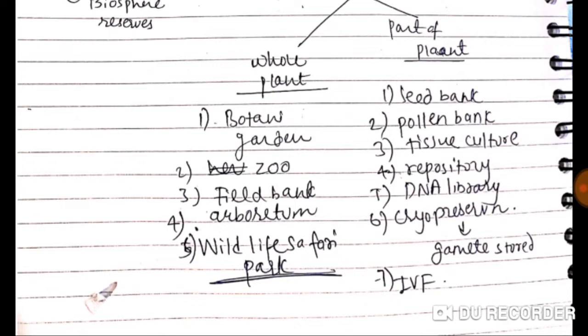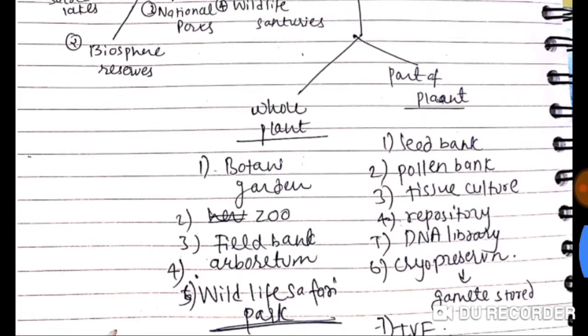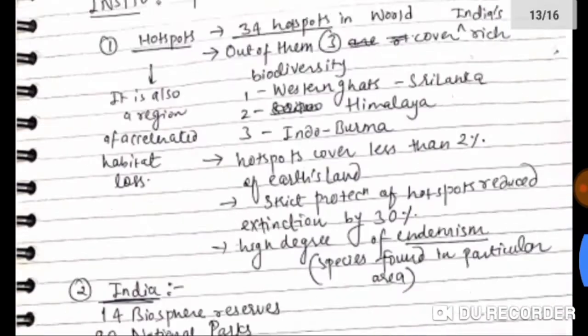Parts of the plant can be conserved as seed banks, pollen banks, tissue cultures, repositories, DNA libraries, cryopreservation (where gametes are stored), and in-vitro fertilization.